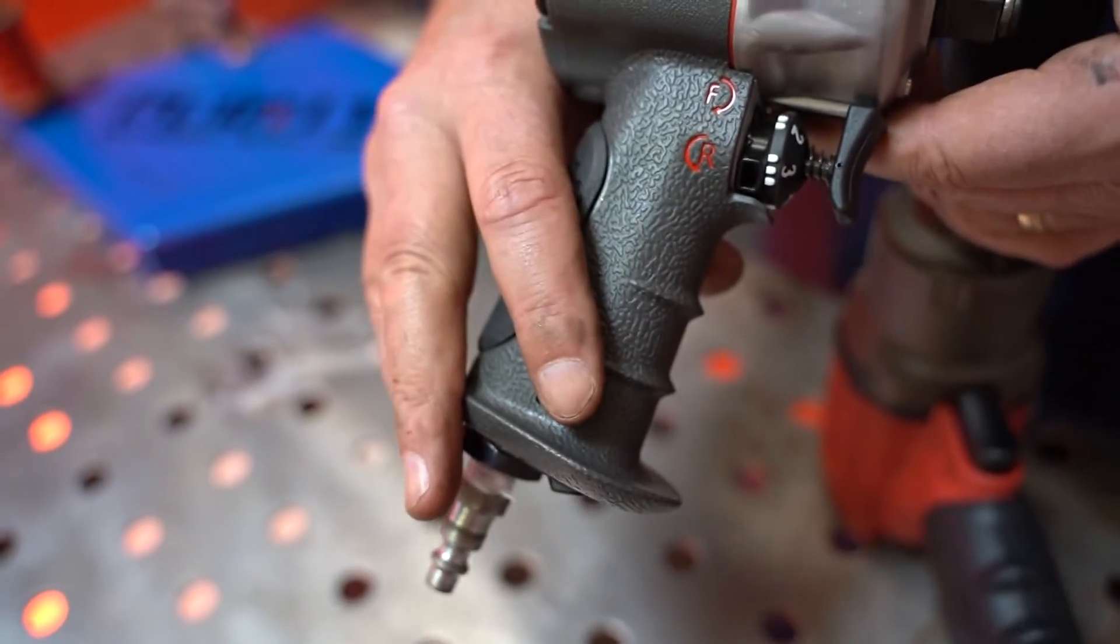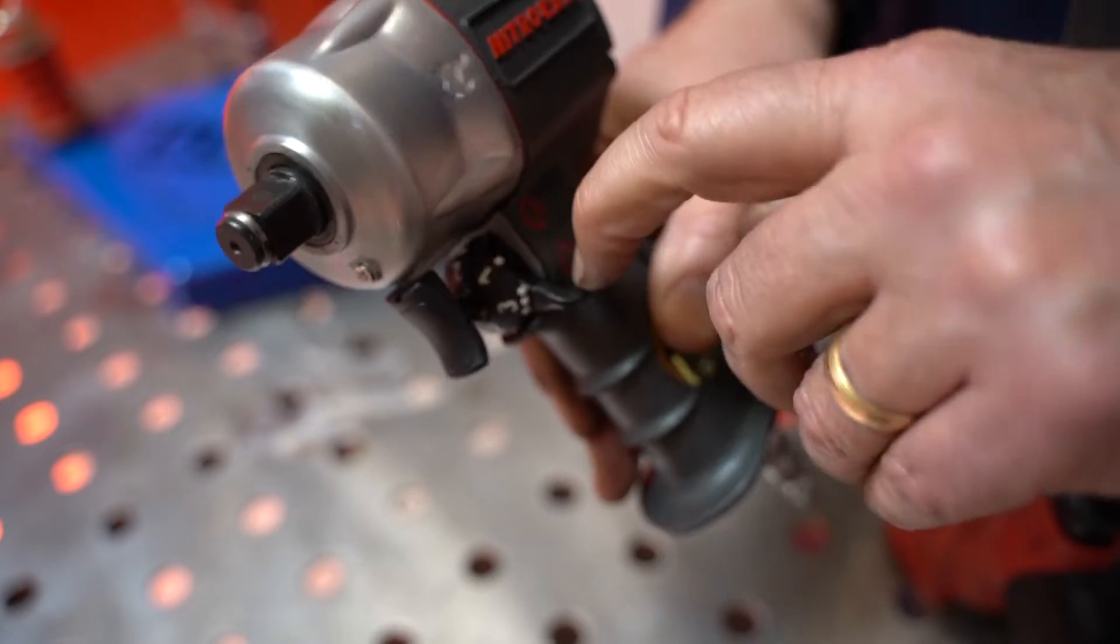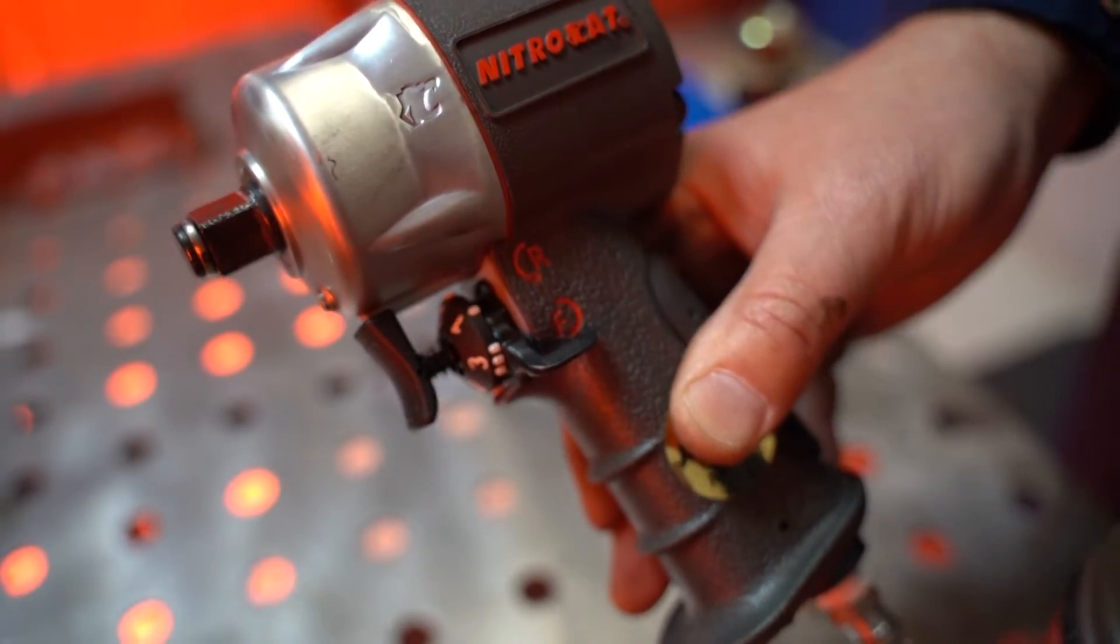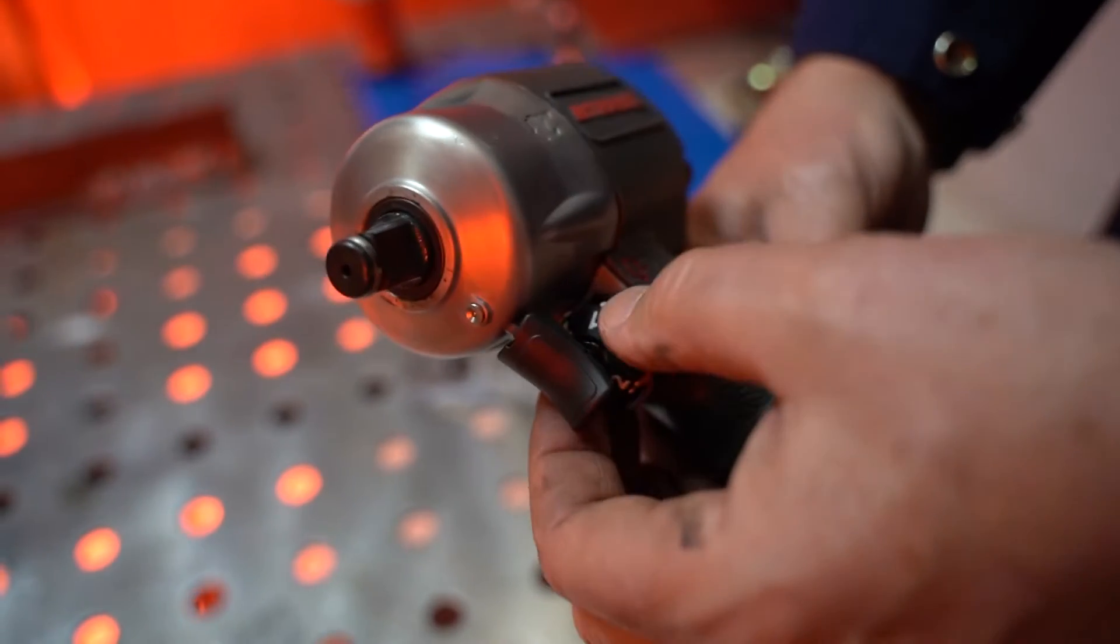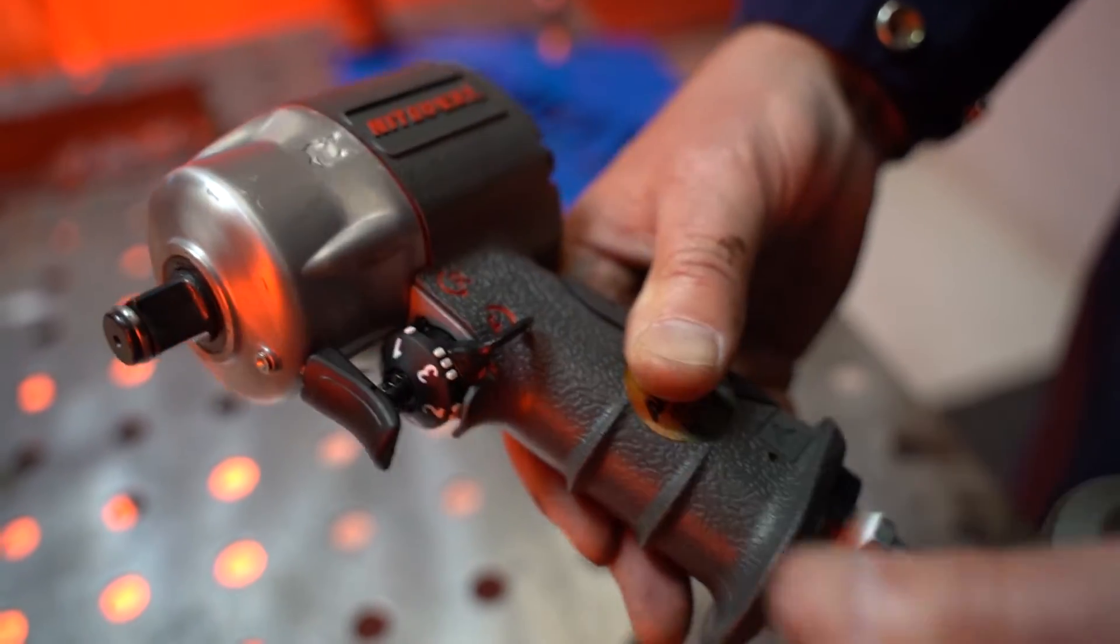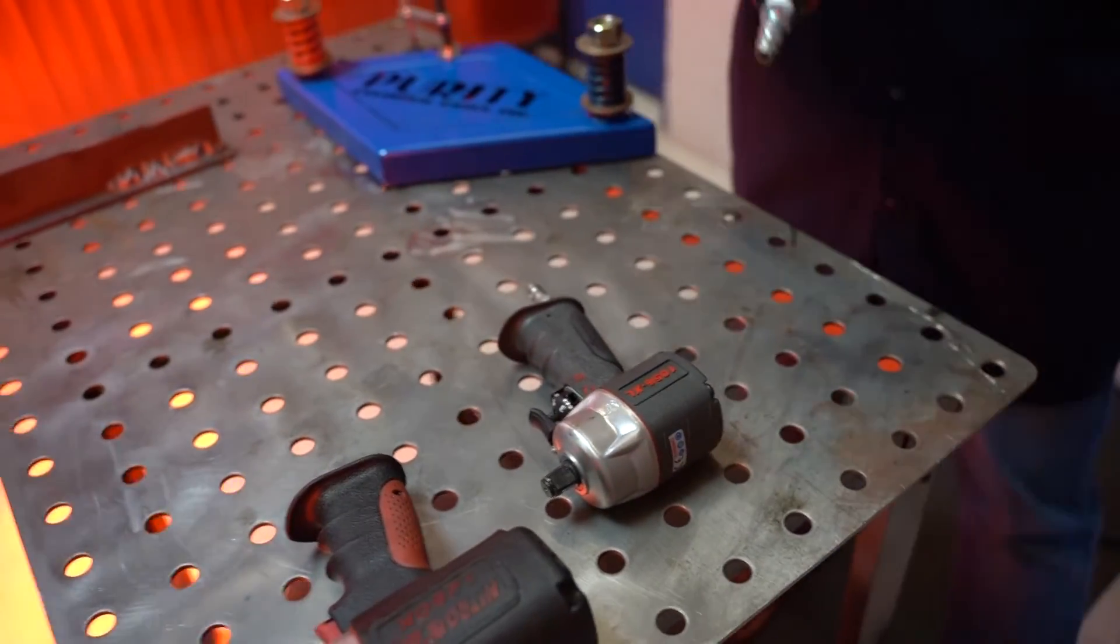And then the trigger is actually where we locate the forward reverse button, as well as the power settings in the dial, settings one, two, or three. So that's the Air-Cat stubby. Let's go ahead and run them.